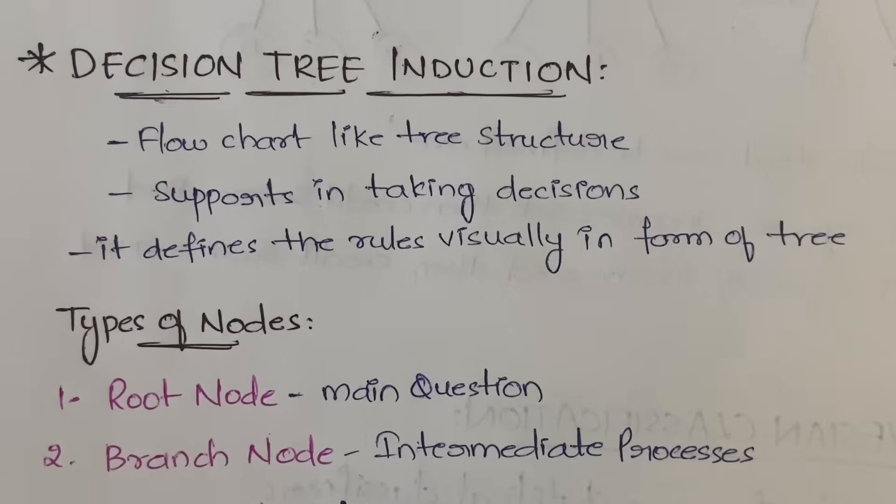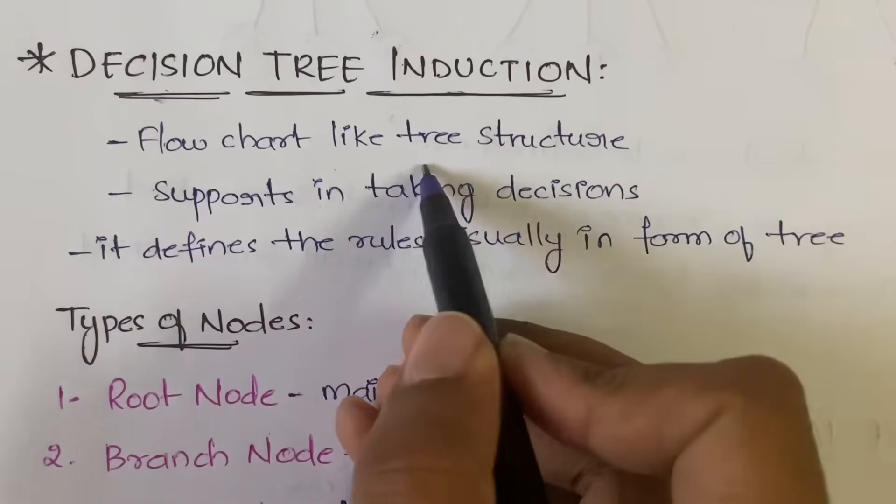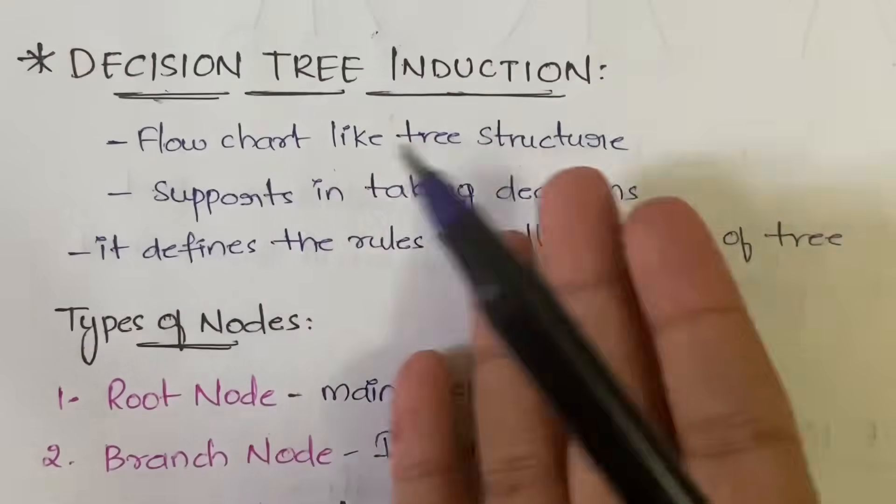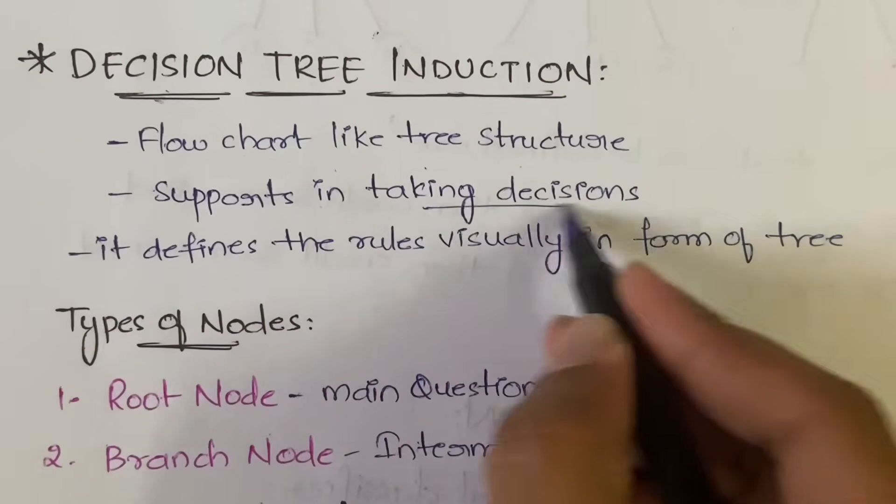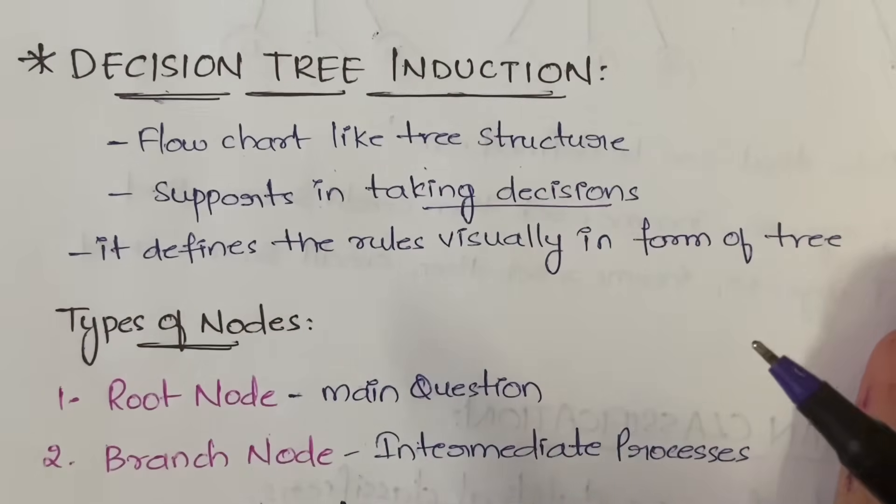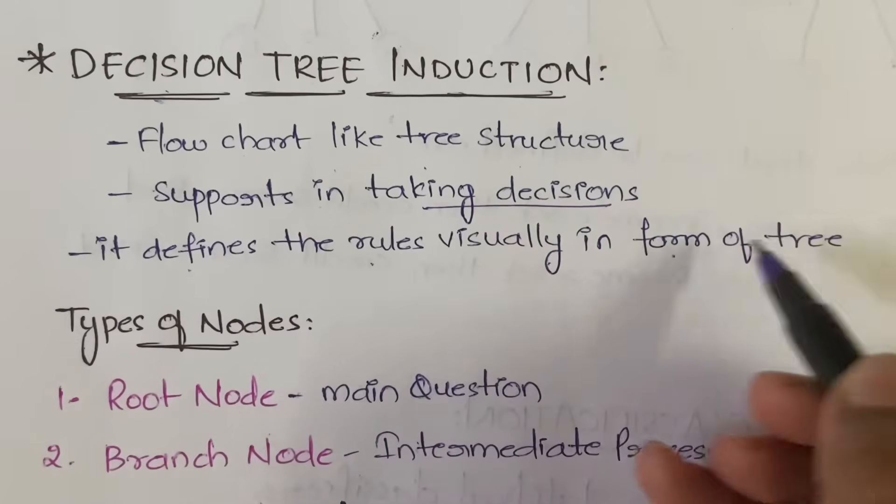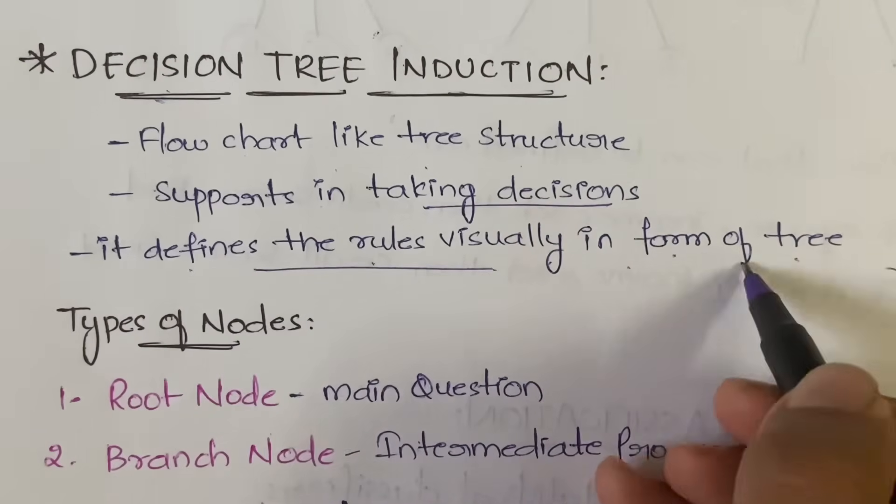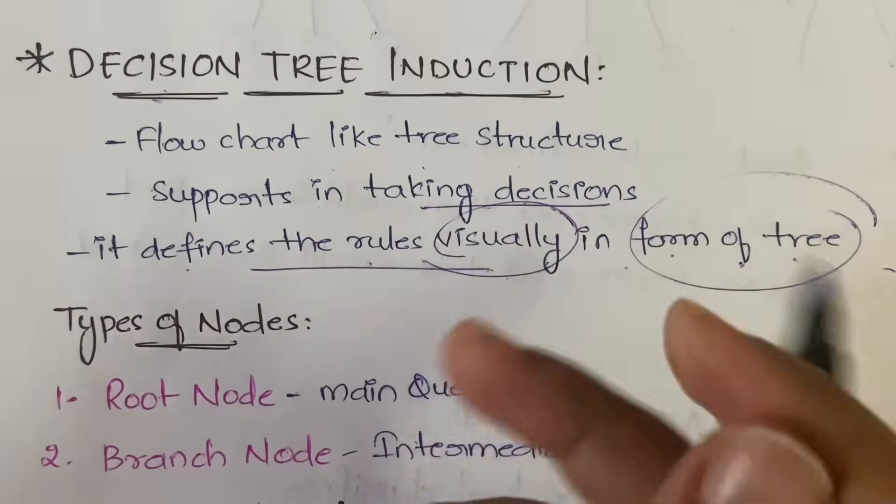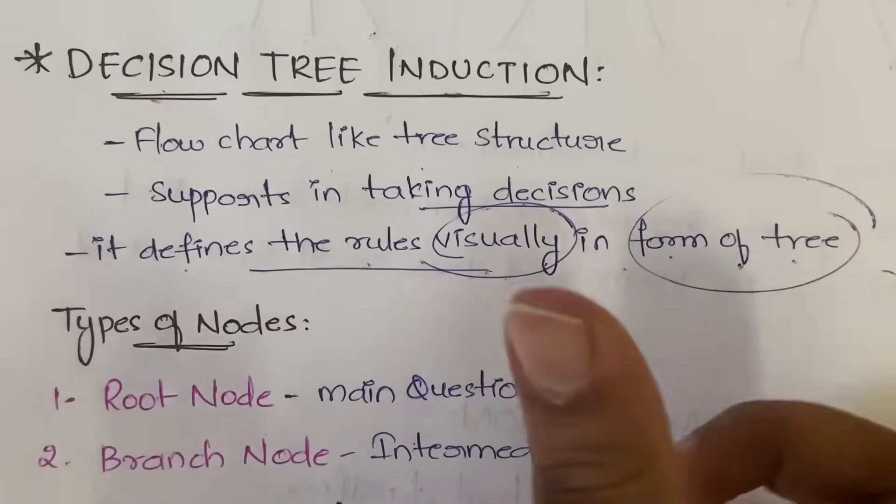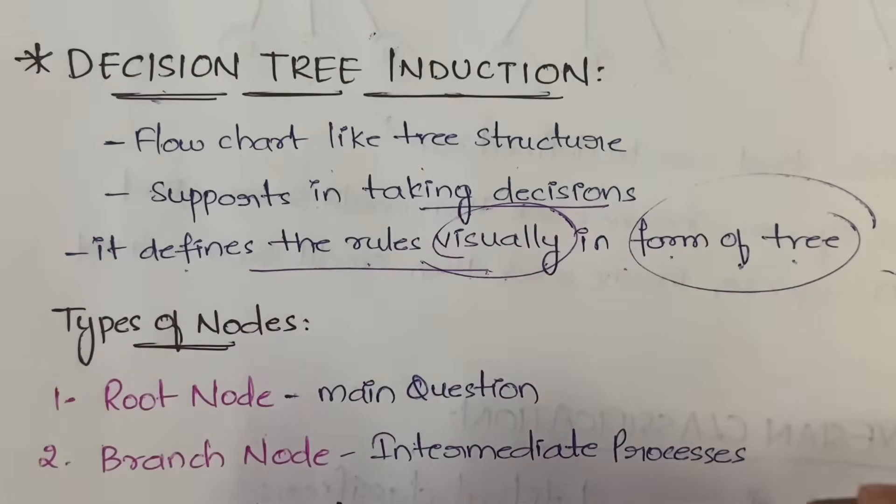A decision tree is a flowchart-like tree structure. It supports in taking decisions, mainly to classify the data, and it defines the rules visually in form of a tree. If the rules are visually defined in form of a tree, you will be able to understand it more clearly, right? That is why the rules are represented visually in the form of a tree.